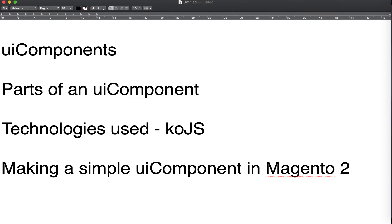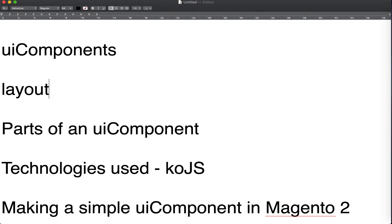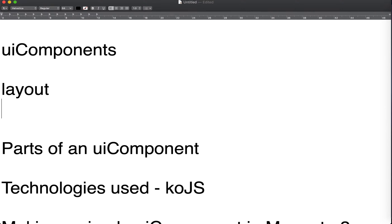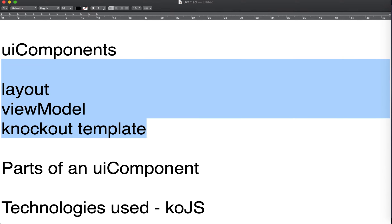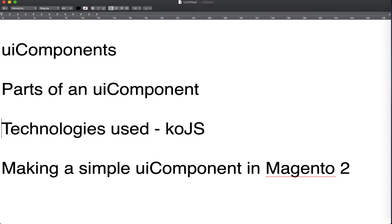Now that that's clear, we come to the parts of a UI component. A UI component has three parts: the layout, which we'll call layout itself; the block, which we'll call the view model; and finally the template, which is a knockout template. These are the three parts of a UI component. The technology used is knockout JS — Magento has made a lot of layers on top of knockout JS, but at the core, UI components are essentially knockout JS.